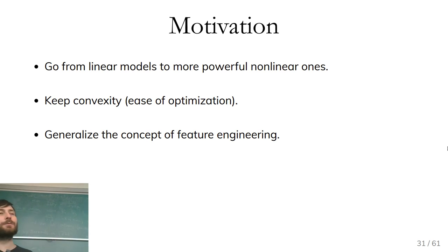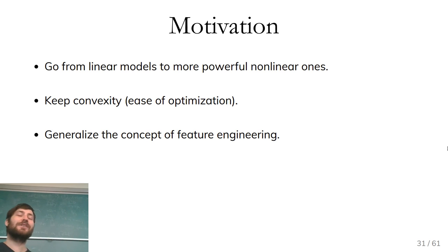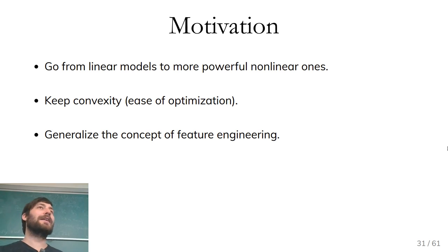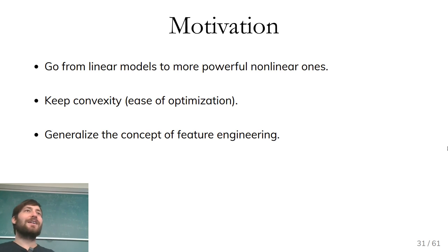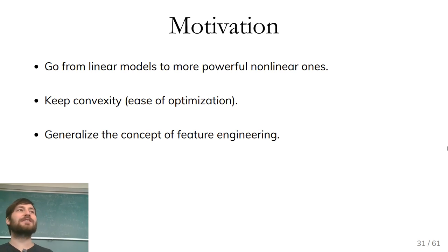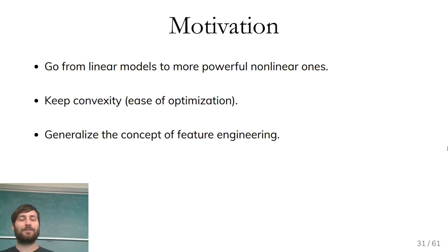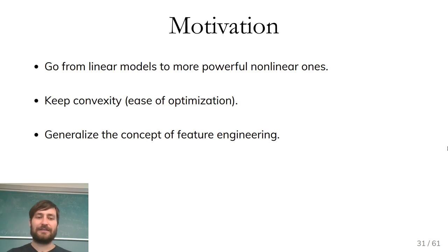In a sense, this is a somewhat similar motivation to neural networks — we're also trying to automate the feature extraction process. The difference is that in SVMs, you keep the convexity, meaning you have a simple optimization problem. This means you're not learning the features — there's just a fixed way to extract features in a fancy way. Neural networks learn feature extraction, which is arguably more flexible, but then your optimization problem becomes very hairy with non-convex optimization, learning rates, and other complications.